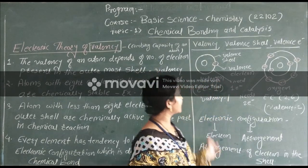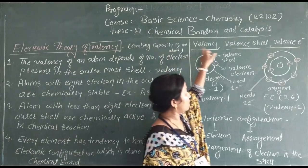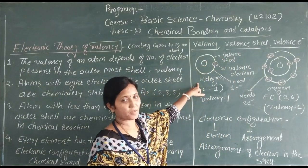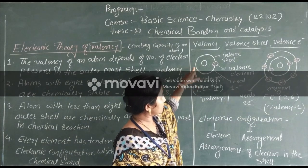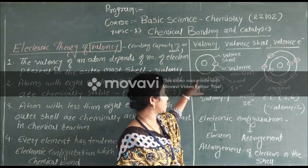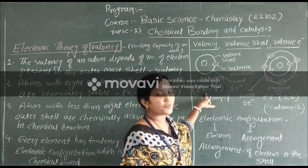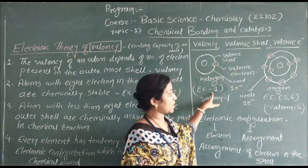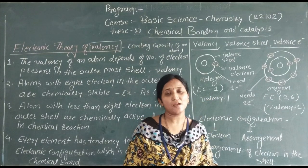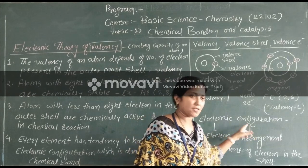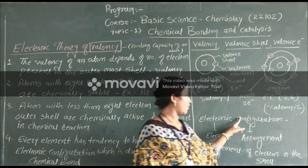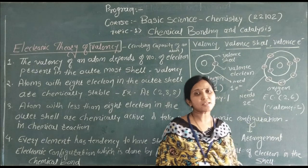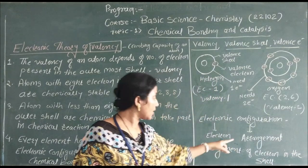What is meant by electronic configuration? Electronic configuration means the arrangement of electrons in the shells. So, the arrangement of electrons in the shells is called electronic configuration.